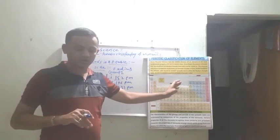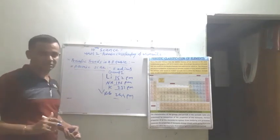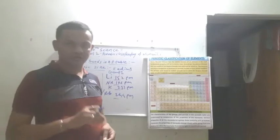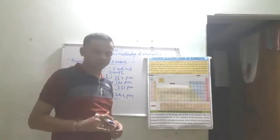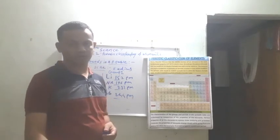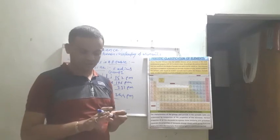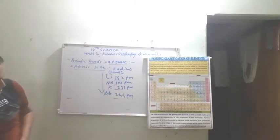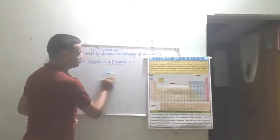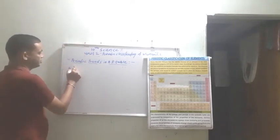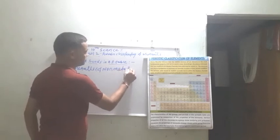So the atomic radius goes on decreasing within a period from left to right. This is about atomic size and its periodic trend. The next property which shows periodic trends in the modern periodic table is metallic and non-metallic property. This is the last property which indicates periodic trends in the modern periodic table. First was valency, second was atomic size, and next is metallic and non-metallic character.